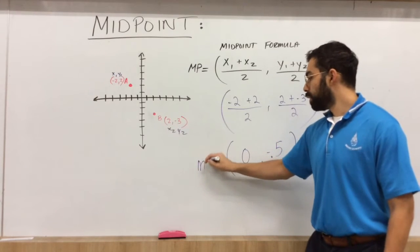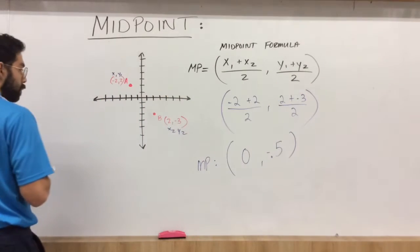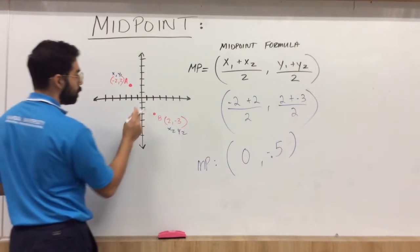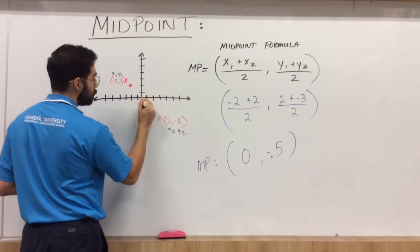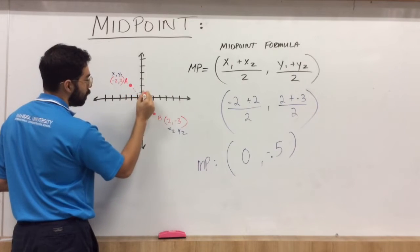So what we found out is our midpoint. Our midpoint lands and it should be pretty close here, right about here. Okay, so between these two endpoints A and B we have our midpoint.